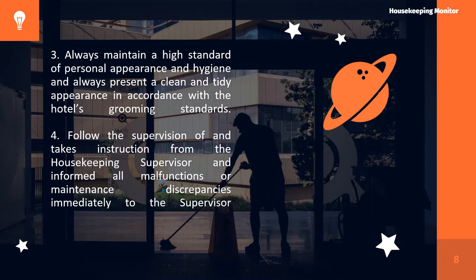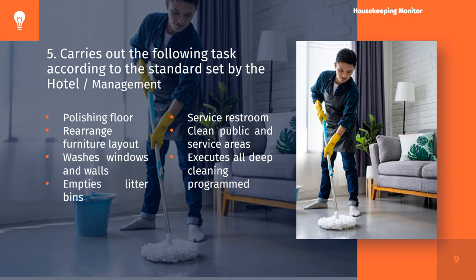Number 4: Follow the supervision of, and take instructions from the housekeeping supervisor, and inform all malfunctions or maintenance discrepancies immediately to the supervisor. Number 5: Carries out the following tasks according to the standards set by the hotel: polishing floor, rearranging furniture layout, washing windows and walls, emptying litter bins, servicing rest rooms, cleaning public and service areas, and executing all deep cleaning programs.